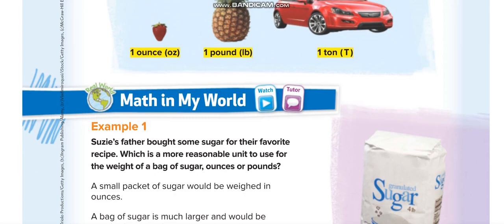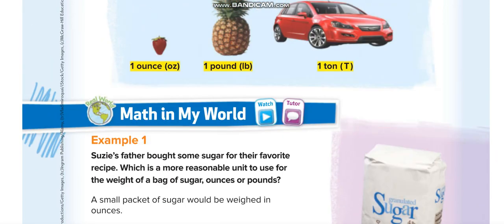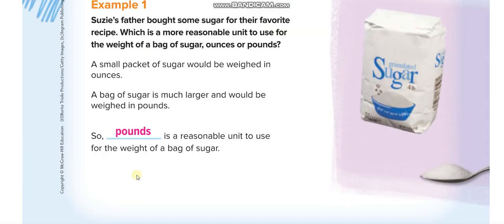Let us start the lesson now. Here, if you see this sugar bag, it's not that light like a strawberry or that heavy like a car. So the reasonable estimate for this sugar bag is pound. Pound is a reasonable unit to use for the weight of a bag of sugar. We will estimate exactly like this in this lesson.